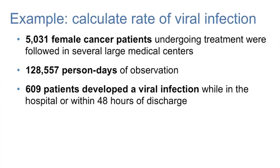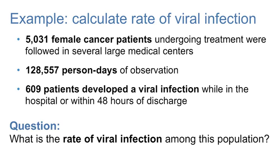Let's look at this example of calculating the rate of viral infection among women undergoing cancer treatment at several large medical centers. We have 5,031 female cancer patients. Among these women, they contributed 128,557 person days of observation. Among the group, 609 patients developed a viral infection while in the hospital or within 48 hours of discharge. So, let's answer the question, what is the rate of viral infection among this population?